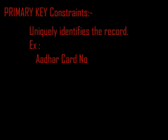The next constraint is the primary key constraint. It is used to uniquely identify a record. For example, Aadhaar card numbers in India — nobody has the same Aadhaar card number, and using it we can correctly identify a person. That is the purpose of a primary key. The difference between unique and primary key: unique constraint can be applied to more than one column, but primary key can be applied to only one column.